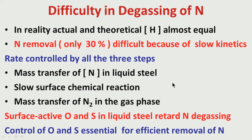That is the basic difference between nitrogen and hydrogen. Hydrogen atoms are very small in atomic size, so their diffusivity is very fast. Mass transfer of hydrogen is faster, and mass transfer of hydrogen gas in the gas phase is also faster. But nitrogen diffusion is relatively slower. So mass transfer of nitrogen in liquid steel is slower, and mass transfer of nitrogen in the gas phase is also slower.